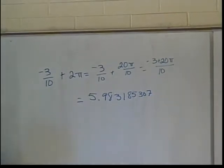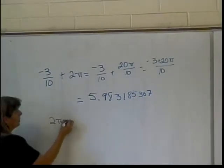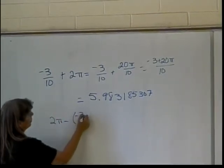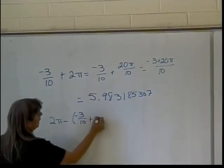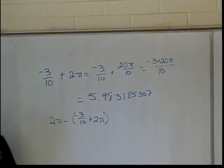In quadrant 4, what do I do to find the reference angle? 2 pi minus the angle. I do 2 pi minus the angle, so 2 pi minus negative 3 over 10 plus 2 pi. Whoa. What? And you can just type that into your calculator, yes. I mean, it is in the computer. Wait, why do you do that?